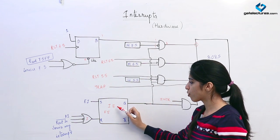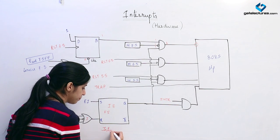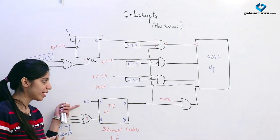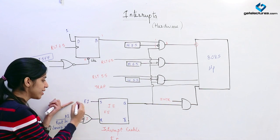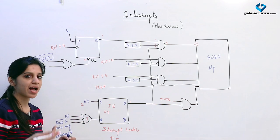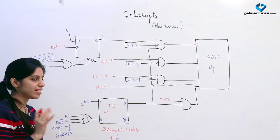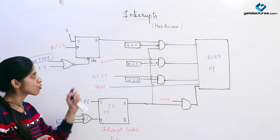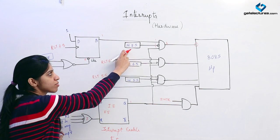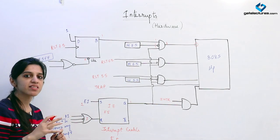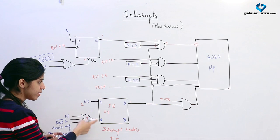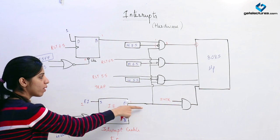There is an IE (interrupt enable) flip-flop. Suppose I want to enable the interrupt so that any interrupt can come — I will give EI as 1. EI is the S input of this SR flip-flop, and when S is 1, Q is going to be 1, so all inputs of the AND gate will be 1, meaning any interrupt can come. But if I want all other interrupts to come but block RST 7.5 specifically, I can use M 7.5, M 6.5, or M 5.5 — a series of D flip-flops used to mask a particular single interrupt while other interrupts remain unchanged.